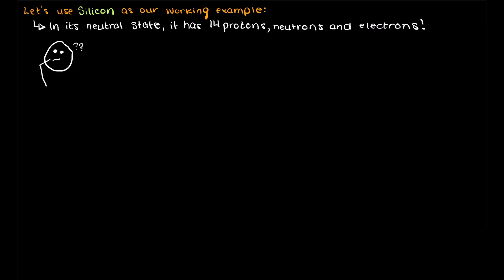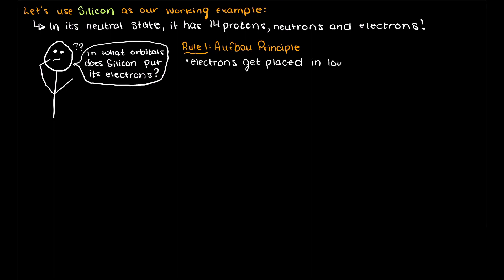So we are trying to find out in what orbitals does silicon place its electrons? The first rule to finding the electron configuration is called the Aufbau principle, which states that we must place our electrons in the lowest energy states first and then work up to the higher energy states.